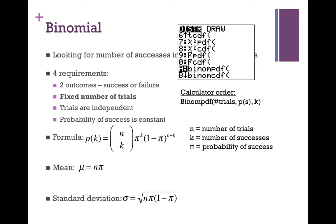Use binompdf if you want the probability of exactly two girls. Use binomcdf if you want the probability of at most two girls in a four-child family. Remember that cdf does less than or equal to only — if you put in two, it gives you two, one, and zero. If you want less than three girls, you do less than or equal to two. If you want the probability of at least one girl (greater than or equal to one), you do one minus the probability of zero girls.